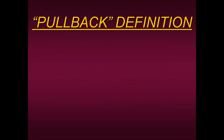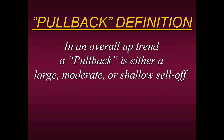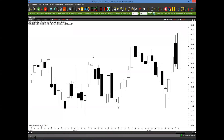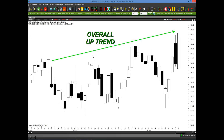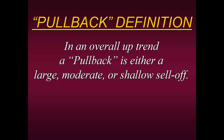Let me give you the definition of what a pullback is for those of you traders not familiar with pullbacks. In an overall uptrend, a pullback is either a large, moderate, or shallow sell-off. As we look at this chart, we see we're in an overall uptrend — we're making higher highs and higher lows. What you want to do as a pullback trader is to buy at these certain low areas. You're not picking a bottom; you're staying within the overall trend and picking those small sell-offs within the overall uptrend.